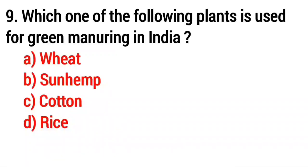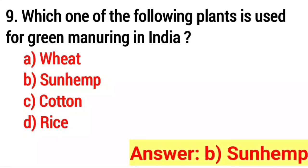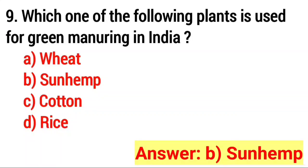Question number nine: which of the following plants is used for green manuring in India? Answer option B, sun hemp.